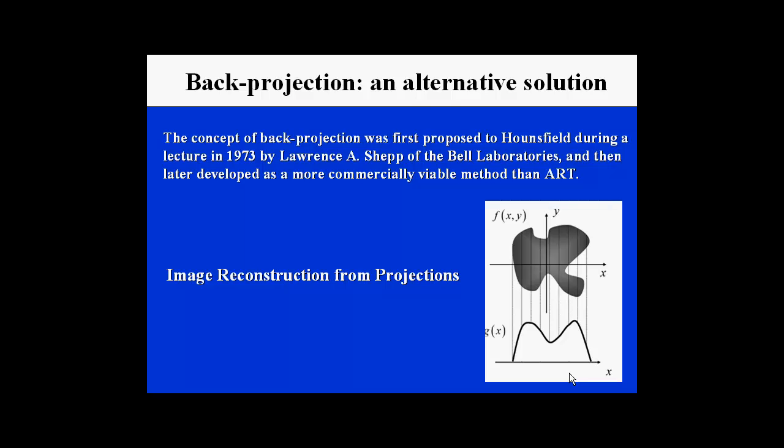The concept of back projection was first proposed to Hounsfield during a lecture in 1973 by Larry Shep of the Bell Laboratories in New Jersey, and then later was developed as a more commercially viable method than algebraic reconstruction technique. This is basically image reconstruction from projections. X-ray data are sent through the object of interest, and the data are then incident upon a set of detectors, which produce a particular density profile.